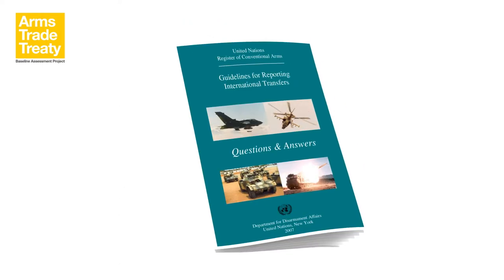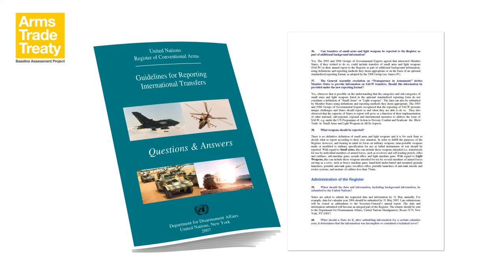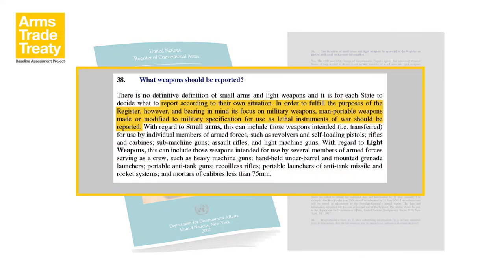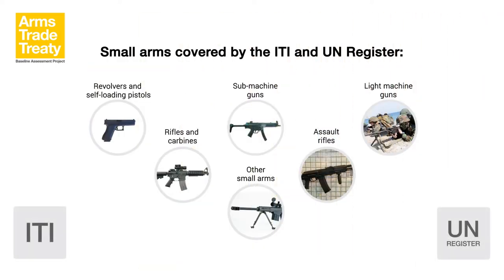The UN Office for Disarmament Affairs provides some guidance in Guidelines for Reporting International Transfers to the UN Register. The latest version of the guidelines was produced in 2007. It advises those states seeking to provide information on international transfers of SALW to report according to their own situation, but to bear in mind the focus of the UN Register on military weapons, man-portable weapons made or modified to military specification for use as lethal instruments of war. A reporting form has been available since 2006 to assist those states that provide information on international transfers of SALW. The form provides no definition of SALW but contains most of the subcategories of small arms and light weapons outlined in the ITI definition.